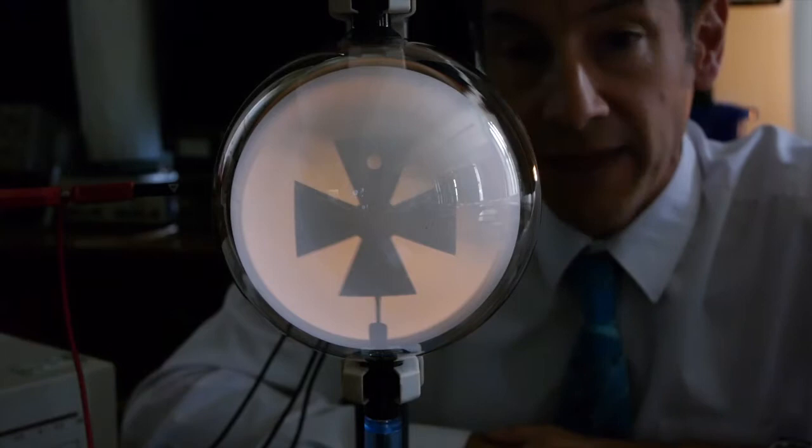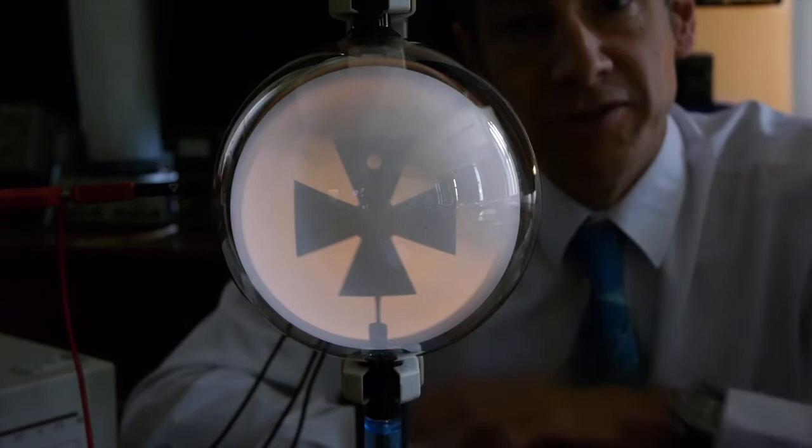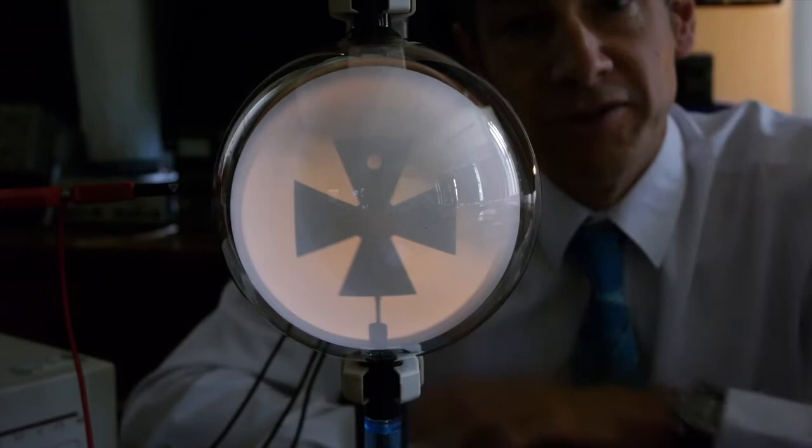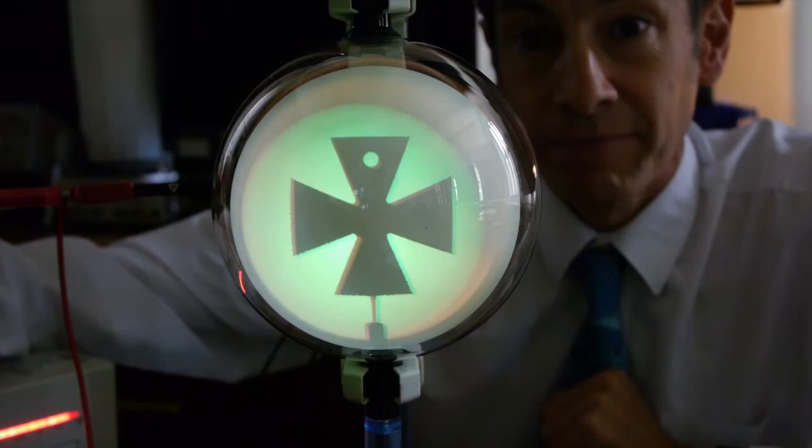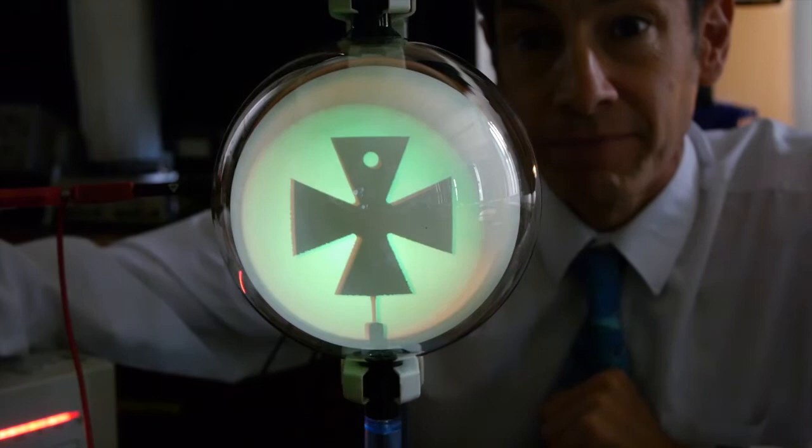Coming out of the electron gun, hitting the Maltese cross and producing a shadow. So we're going to ignore that. And what we're going to do instead is turn up the accelerating voltage. And there we go. There is that glow.